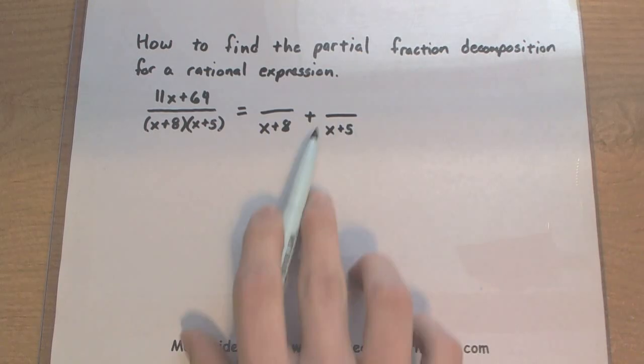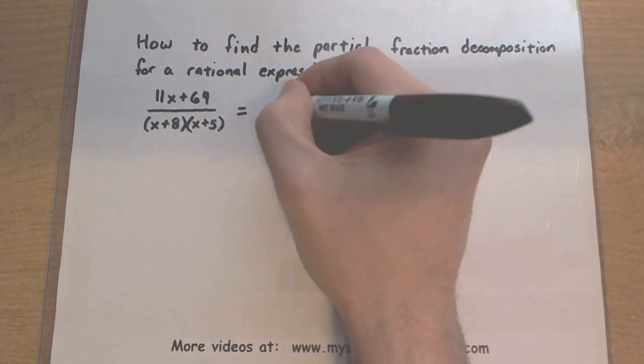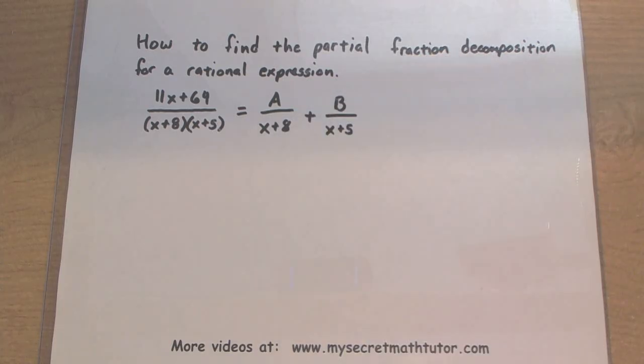Now notice what type of denominators we have. These are both linear, so it tells me that my tops will be a constant of some sort. Now I don't know exactly what they're going to be. This is why I'm labeling them as A and B, but we'll be able to figure them out in just a little bit.